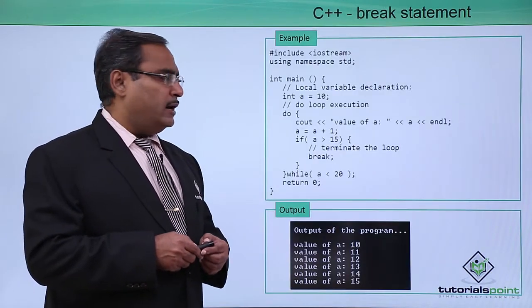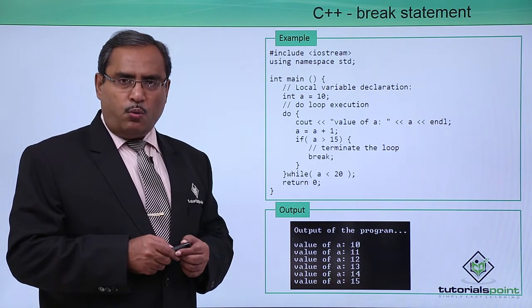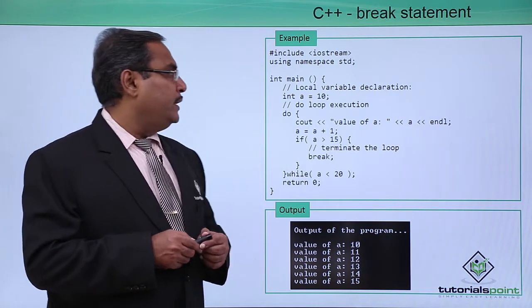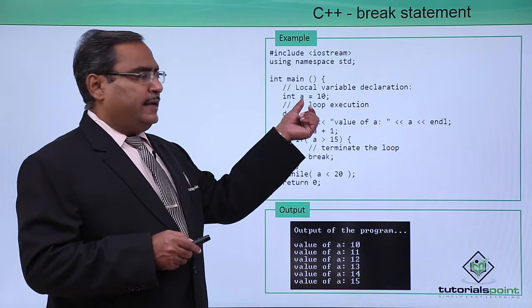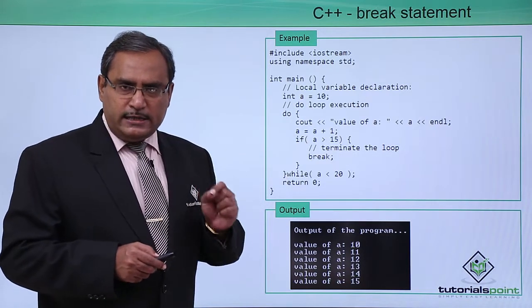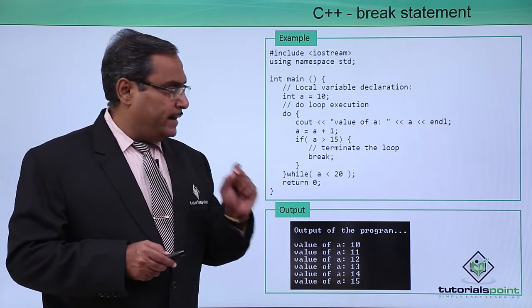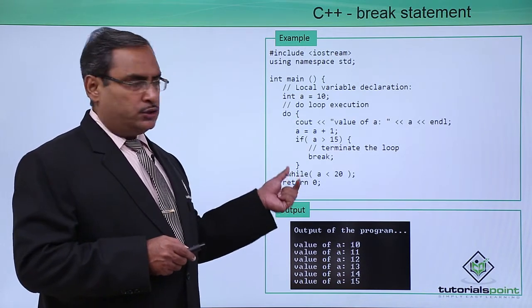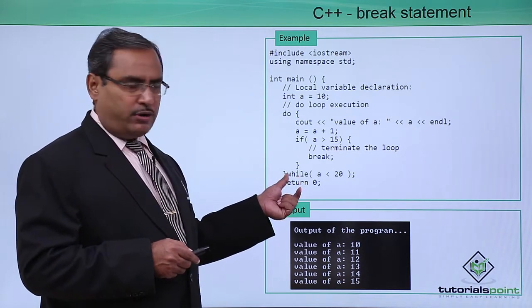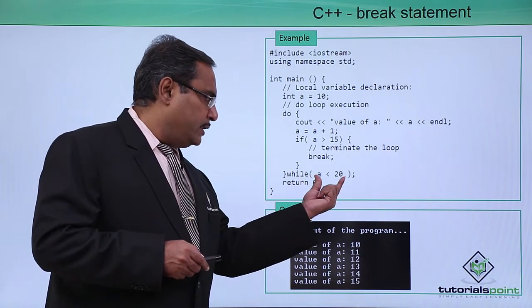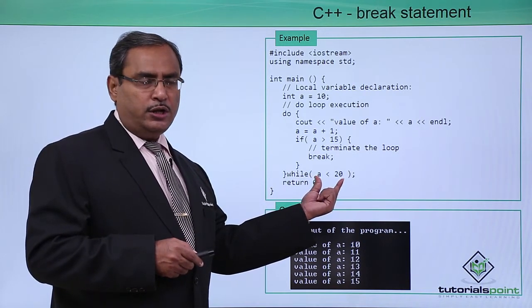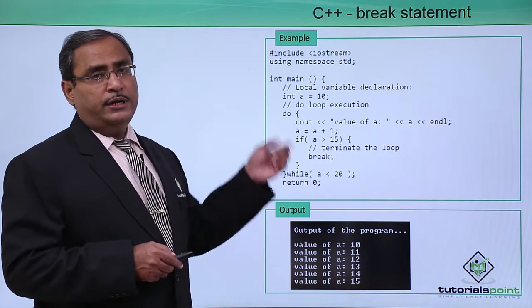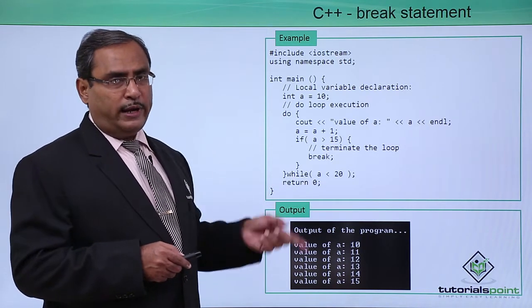I think for better understanding, let us go for one C++ coding. Here we are having this main function. A is nothing but one integer variable initialized with 10 and then this is my do while body. In this do while loop construct, here is the condition that a is less than 20. When a is less than 20, then the loop will go on executing.